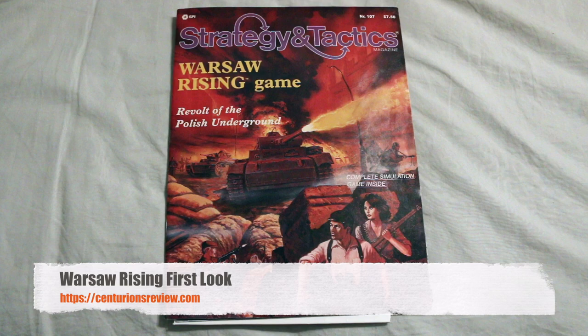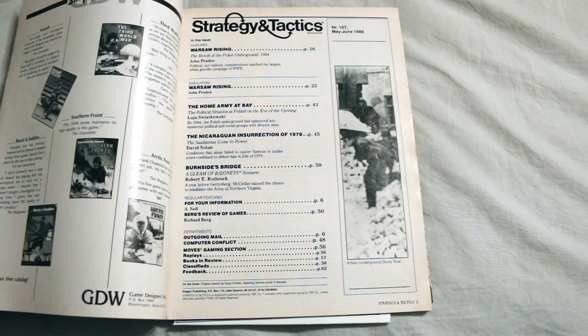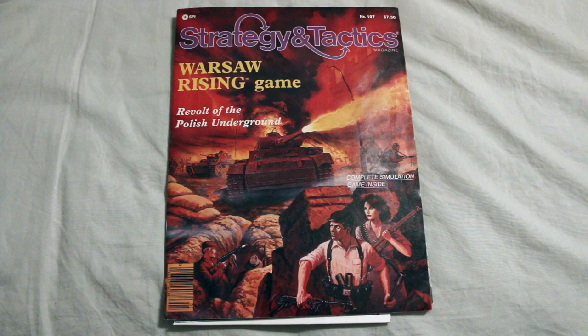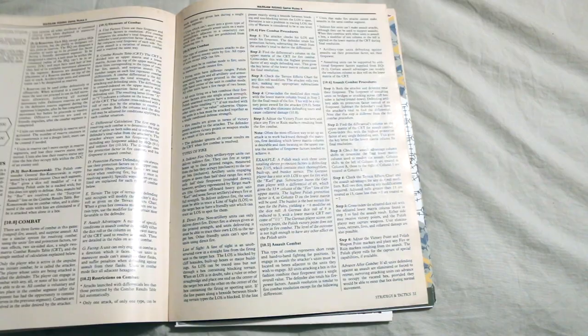Hey guys, it's Dave here. Welcome to Centurion's Review, the punk rock band of war game review institutions. This is Strategy and Tactics number 107, published by SPI in May and June of 1986. The game in here is Warsaw Rising. I believe it's about the Polish underground during 1944. Let's take a look inside and see what this is all about.